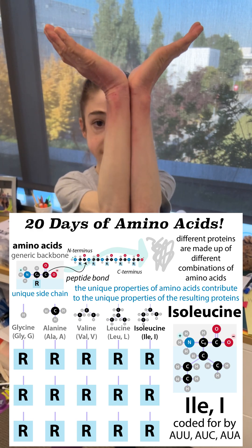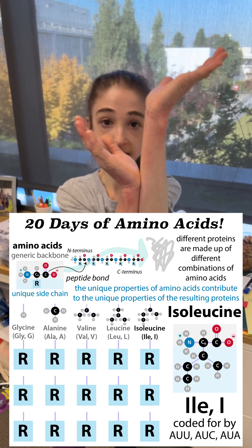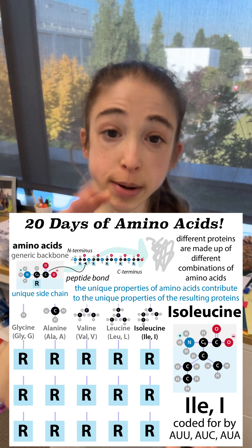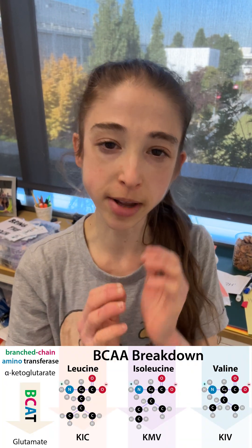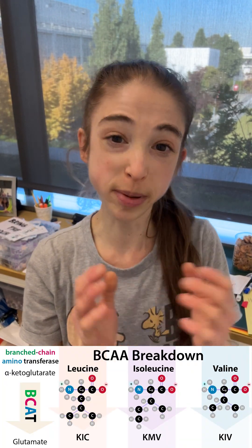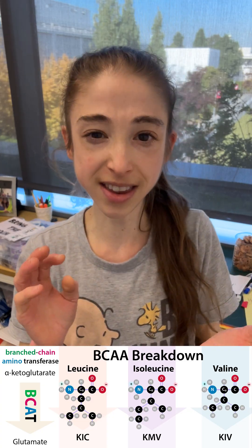Valine, leucine, isoleucine. These are the three branched chain amino acids, or BCAAs.